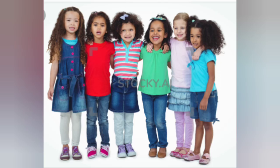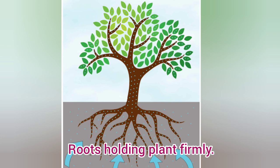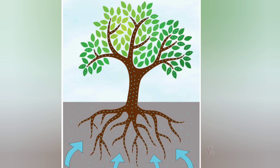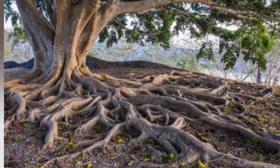Number 4 is: roots hold the plants in soil firmly. Students, just as we stand with the help of our feet, in the same way plants also stand firmly in the soil with the help of their roots. As a result, plants stand straight on the ground. This is beneficial not only for the plants, but also for the soil.